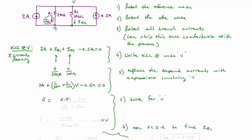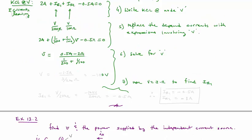V is equal to 0.5 amps minus 2 amps, all of that divided by 1 over 200 plus 1 over 100. And after you do the math, we find that V is equal to minus 100 volts.